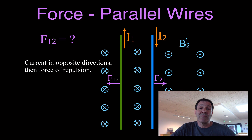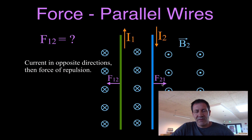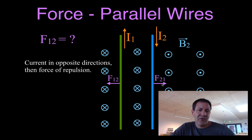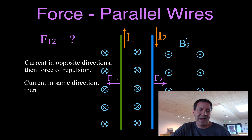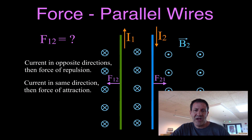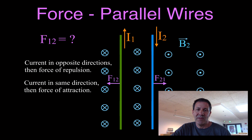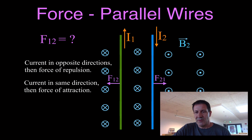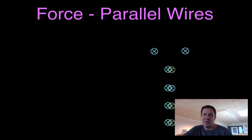You may remember from the previous video that we determined the direction of the force when currents are going in the same direction — in that case, there is a force of attraction between the two wires. Now let's determine the magnitude of the force.